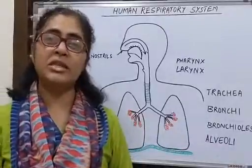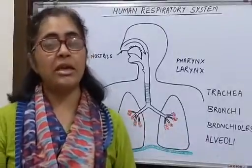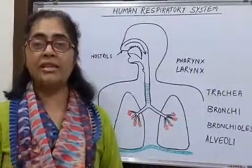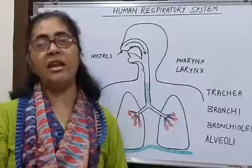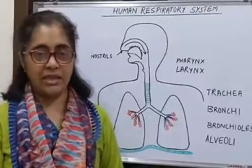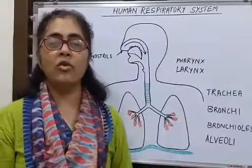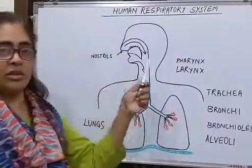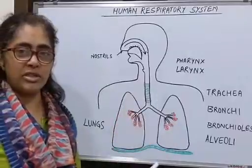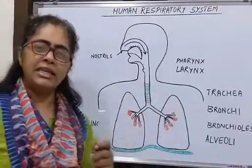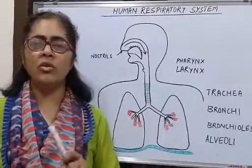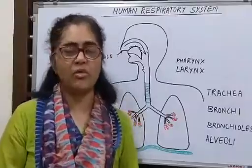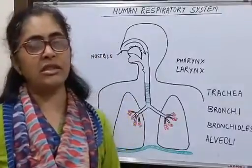The human respiratory system deals with the air that we inhale and exhale. This system involves the movement of air within the respiratory system. Let's now see what organs are involved and what happens to the air once it enters into the lungs.